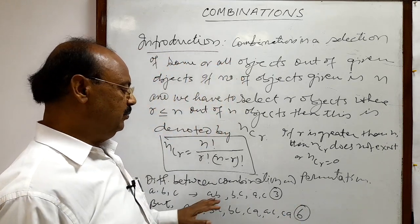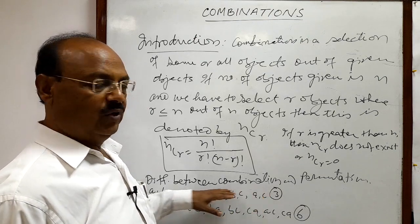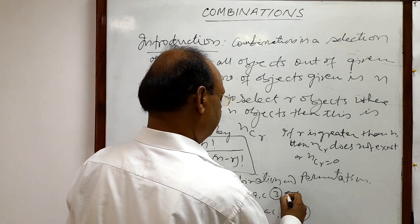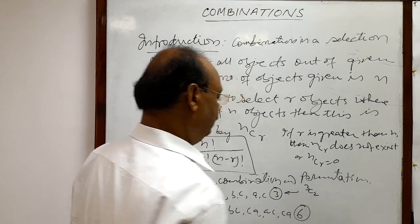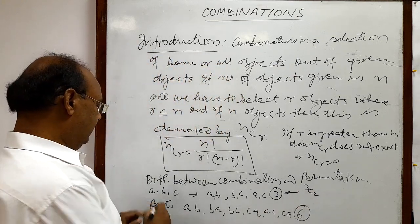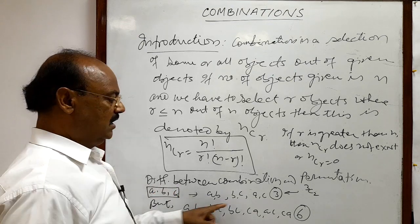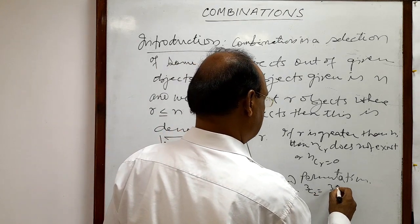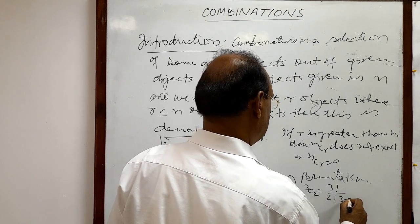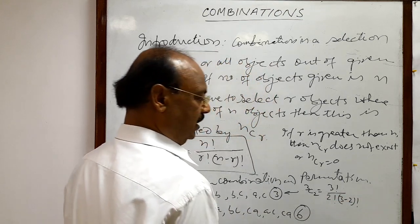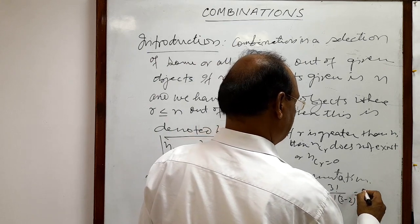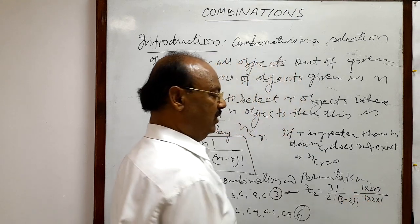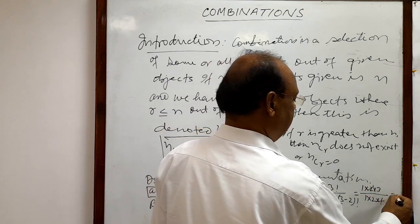This is the difference between combination and permutation. For 3C2 — selecting 2 from three objects A, B, C — we calculate: 3! / (2! × (3−2)!) = (1×2×3) / (1×2×1) = 6/2 = 3. So the number of combinations is three.